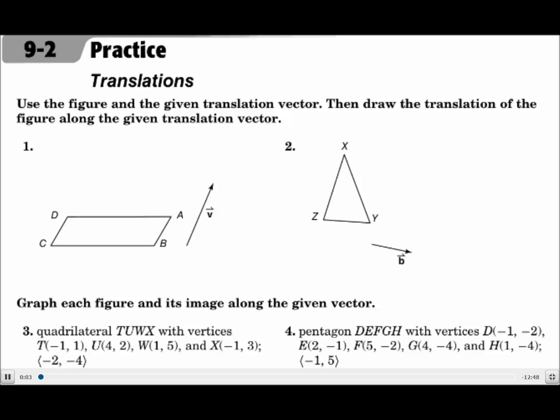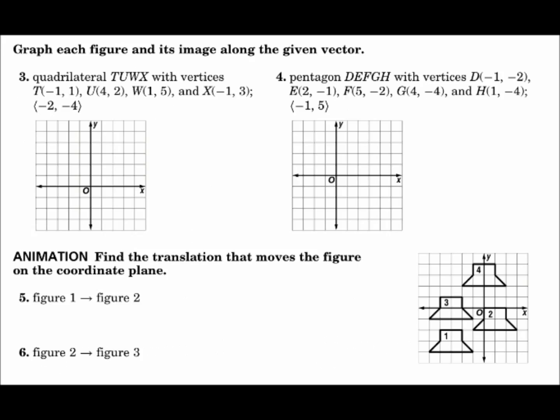This is lesson 9.2, Translations. Your objectives are to draw translations and to draw translations on the coordinate plane. A translation is a slide — it's when you take a point or a figure and slide it to another position. You don't turn it, you don't flip it. It is just a slide.